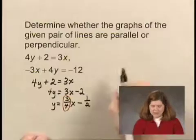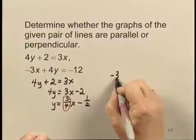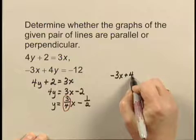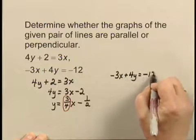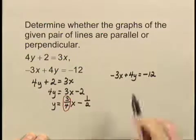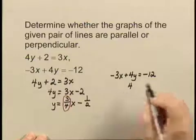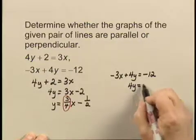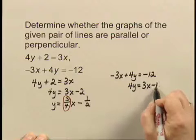Now, let's look at the other line: negative 3x plus 4y equals negative 12. Again, I solve for y. I add 3x on both sides, I have 4y equals 3x minus 12.